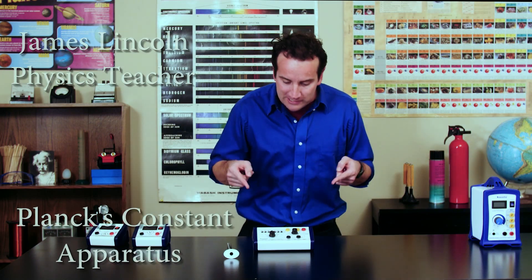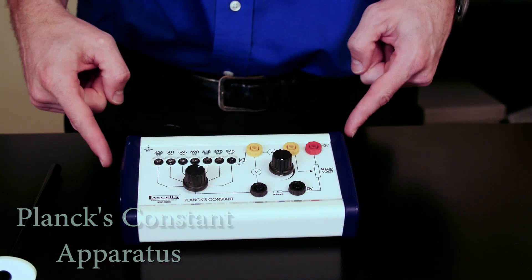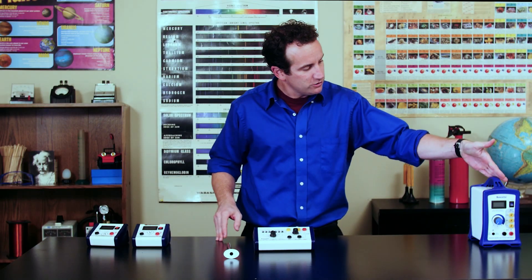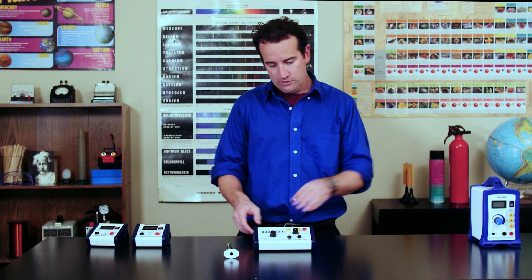This device is a Planck's constant apparatus and it can help you do experiments in modern physics. You can power it with either a DC voltage source or just plug it in.